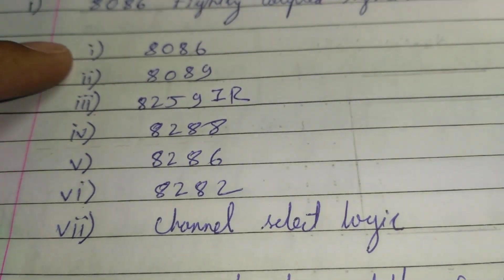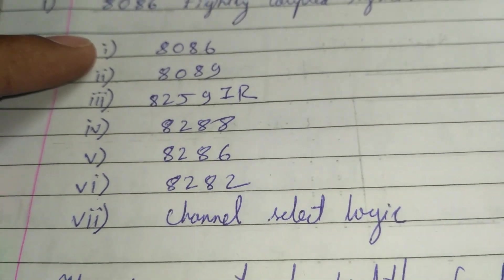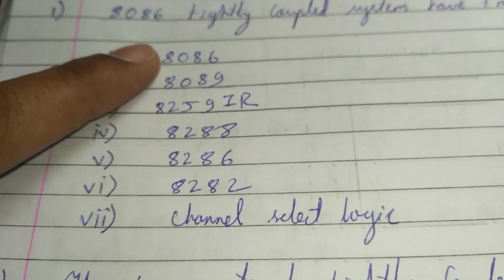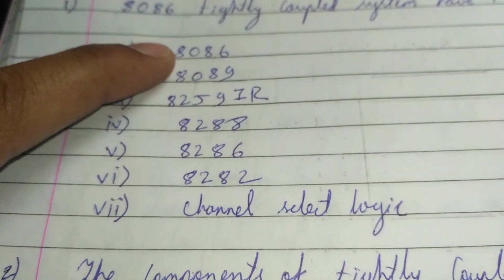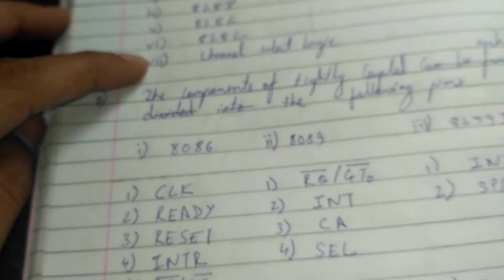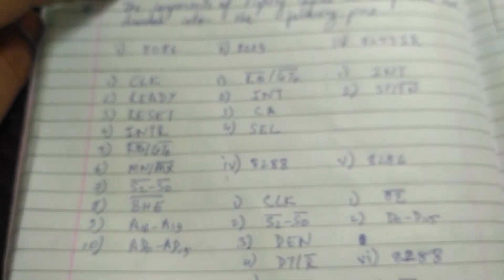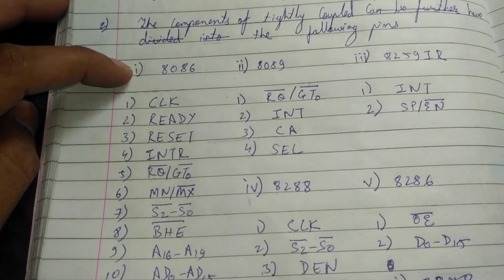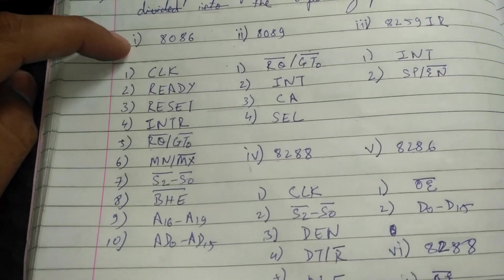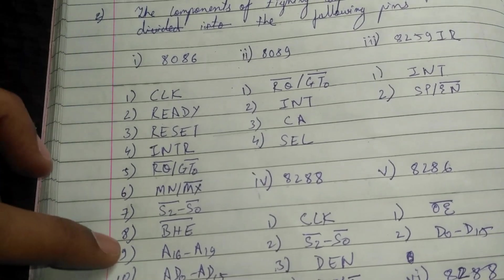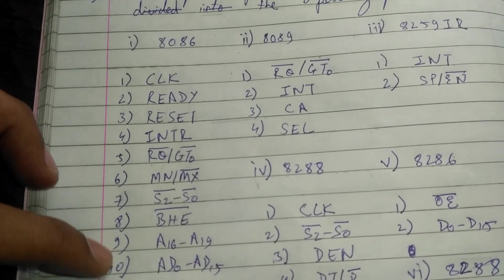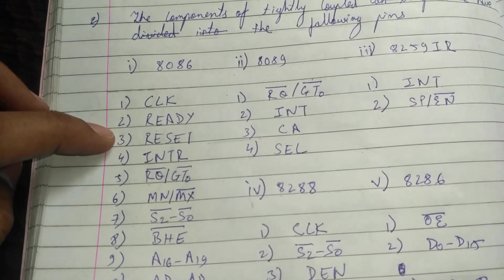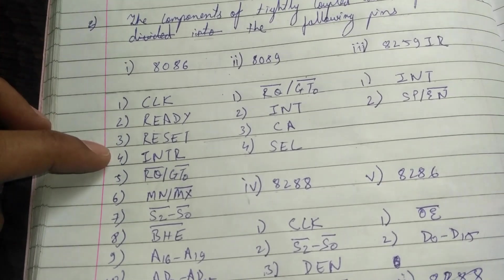The tightly coupled configuration has seven components, and these components have pins which are described below. For the first component, 8086, it has 10 pins. The first pin is CLK, the second pin is READY, the third pin is RESET, and the fourth pin is INTR.